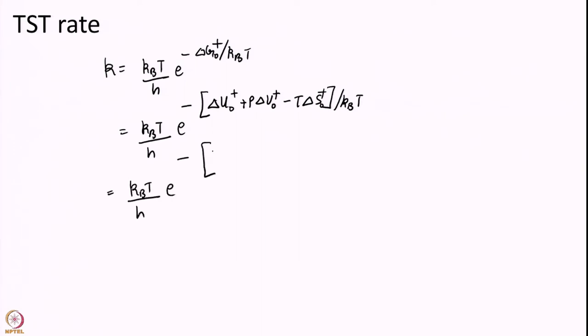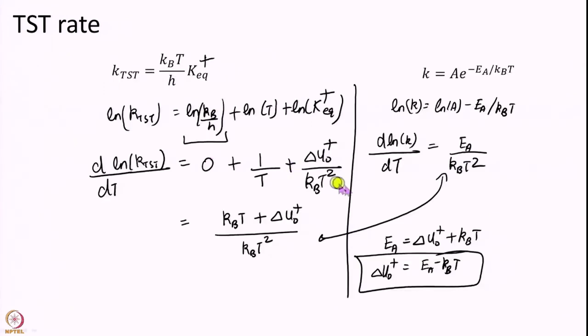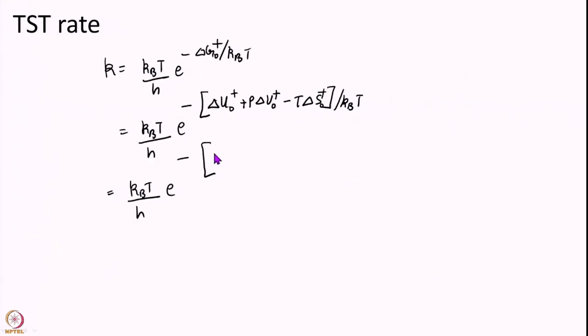But delta U naught in the last slide we showed is related to activation energy. So, delta U naught we showed is equal to EA minus KT. So, we are going to put that here EA minus KT plus P delta V naught minus T delta S naught over KT.